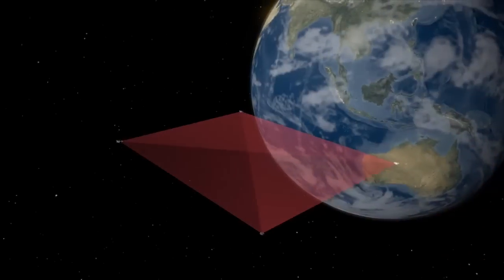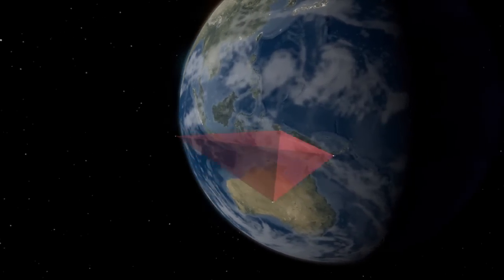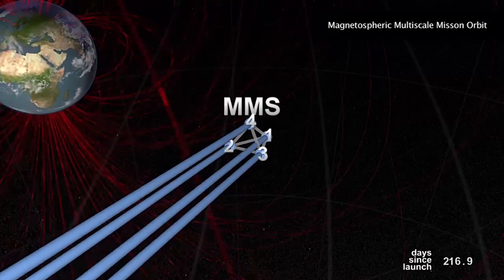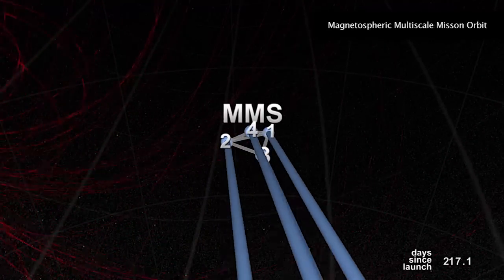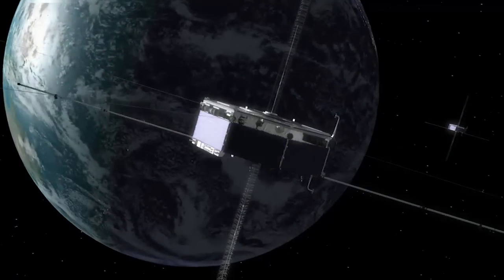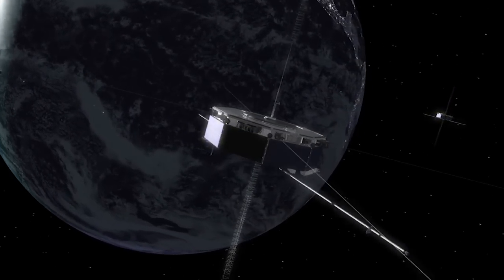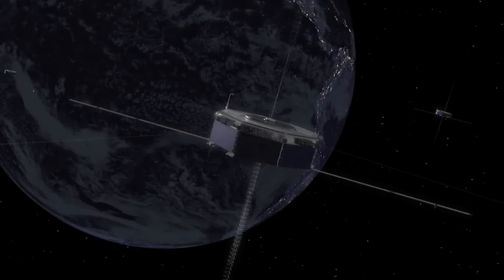During its first phase, MMS satellites will travel through reconnection sites on the Sun's side of Earth. During the second phase of its mission, MMS will observe reconnection on the night side where that connected field flows around both sides of our planet to a second reconnection point.